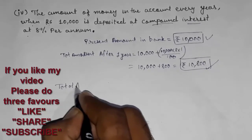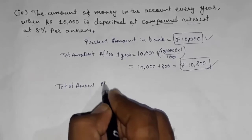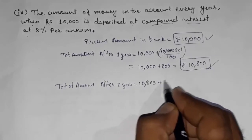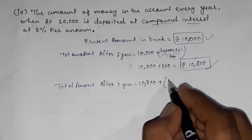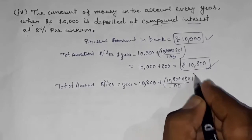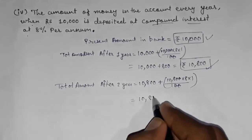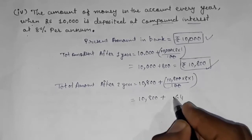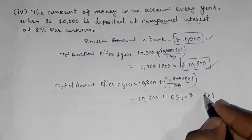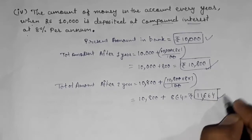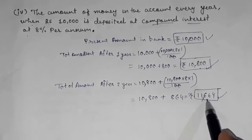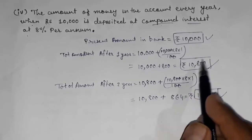Total amount after two years: new principal is 10,800. Interest = (10,800 × 8 × 1)/100 = 864. So total amount = 10,800 + 864 = rupees 11,664. In the first year the amount increased by 800, but in the second year it increased by 864 — the increase is different, so the common difference is not the same and this is not forming an AP.